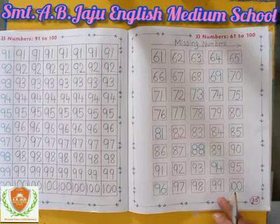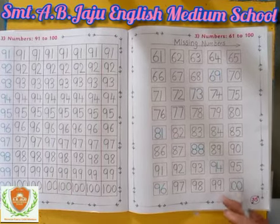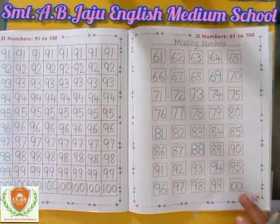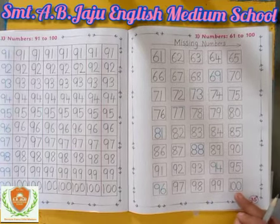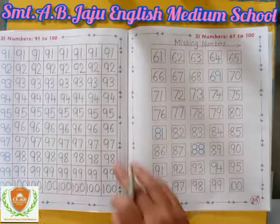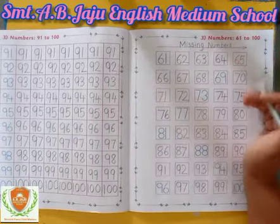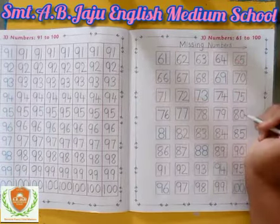Then after 99, which number is this? 100. So this is number 100. So this is called missing number.